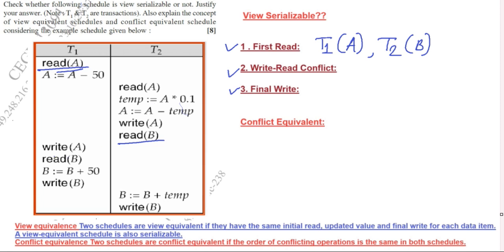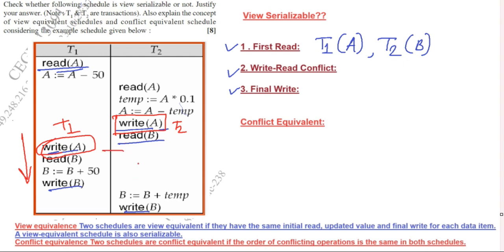Underline all write operations. After writing, there is no read operation on variable A in T1 following T2's write on A. Similarly, for T1's write on A, there is no read operation in T2 following it. So we can conclude that write-read conflict is not present in this schedule.